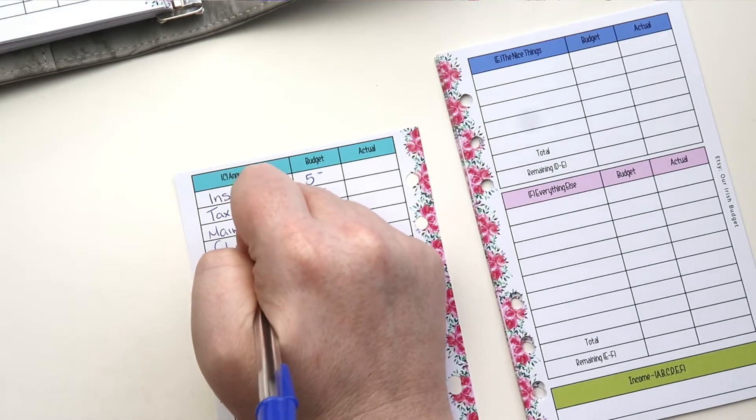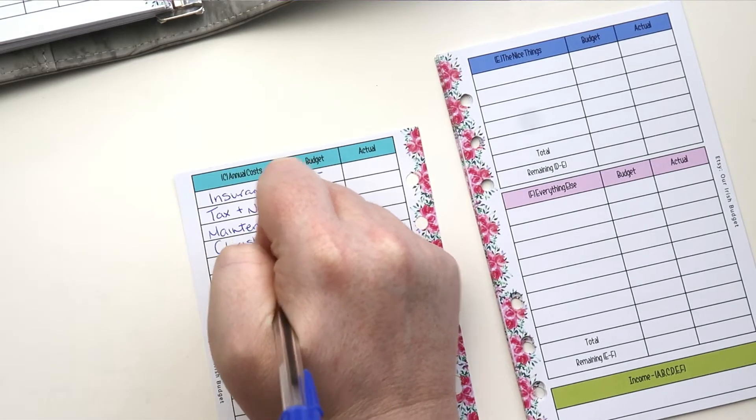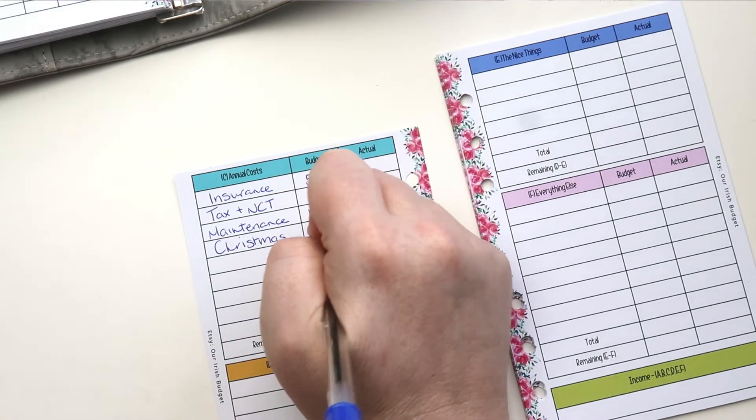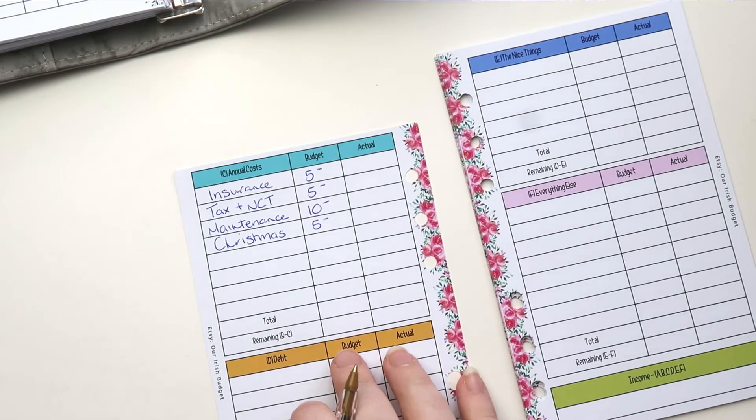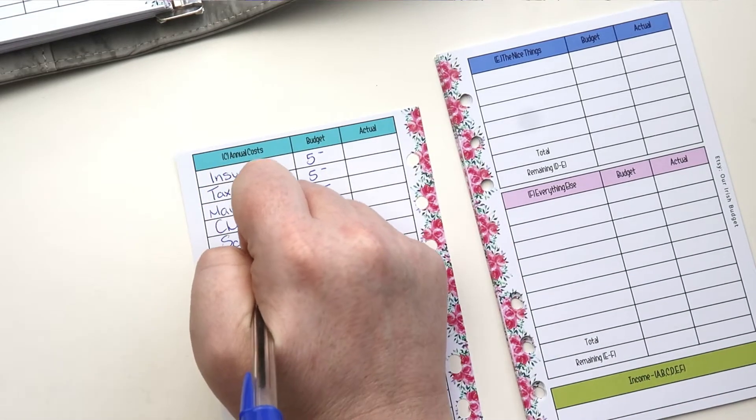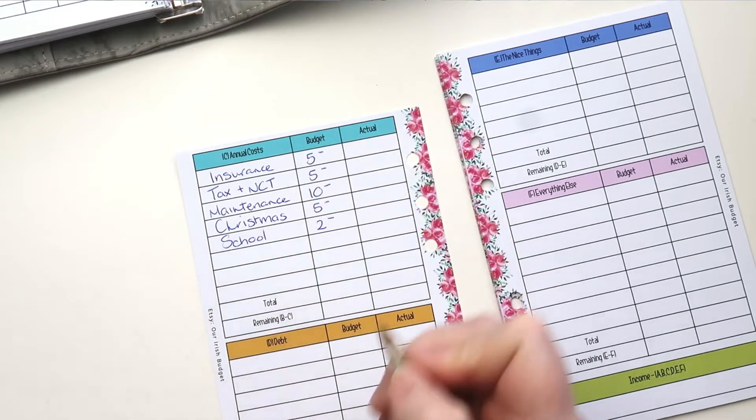Christmas is obviously something that we celebrate and do every single year. So it's full for this year. We're just kind of topping it up with five euros. We have Ava's school. This is just going to be two euros.